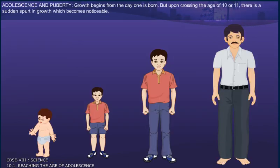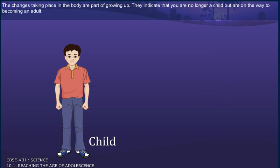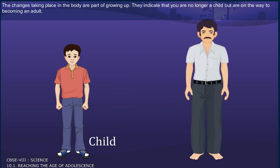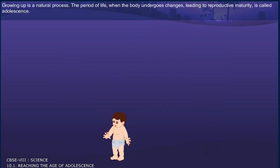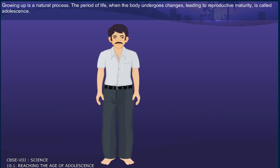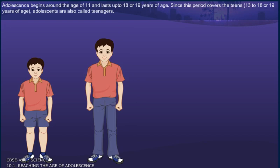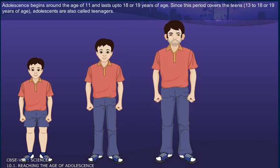Adolescence and Puberty: Growth begins from the day one is born. But upon crossing the age of 10 or 11, there is a sudden spurt in growth which becomes noticeable. The changes taking place in the body are part of growing up. They indicate that you are no longer a child but are on the way to becoming an adult. Growing up is a natural process. The period of life when the body undergoes changes leading to reproductive maturity is called adolescence. Adolescence begins around the age of 11 and lasts up to 18 or 19 years of age. Since this period covers the teens — 13 to 18 or 19 years of age — adolescents are also called teenagers.